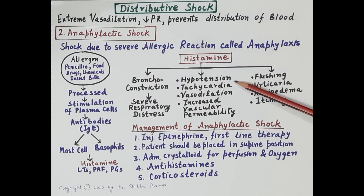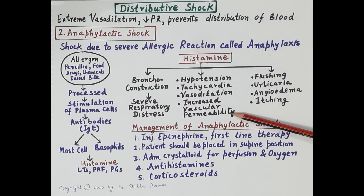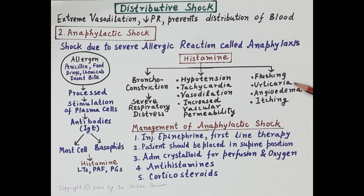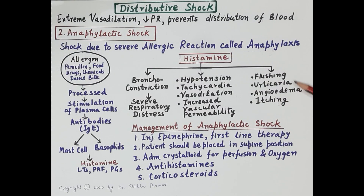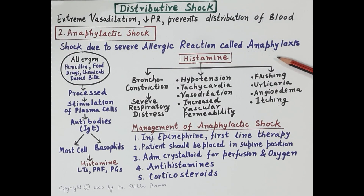Histamine also causes hypotension through dilation of blood vessels, leading to a significant fall in blood pressure, tachycardia, and vasodilation. Vasodilation increases vascular permeability, causing fluid exudation into tissues and resulting in tissue edema. Histamine is also responsible for flushing — redness of the skin — urticaria (red rashes on skin), angioedema (swelling under the skin), and severe itching due to release of inflammatory mediators.